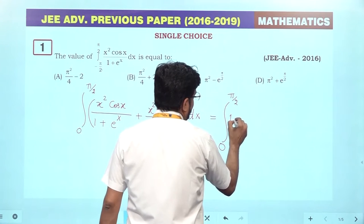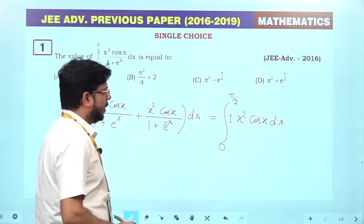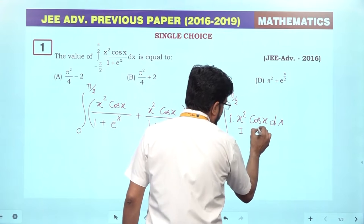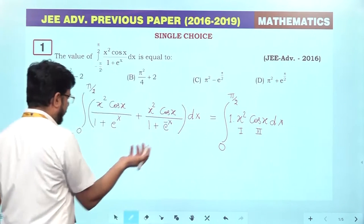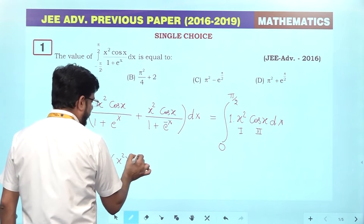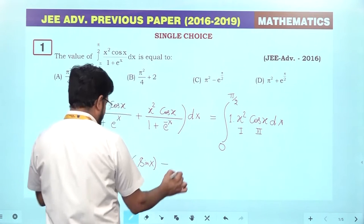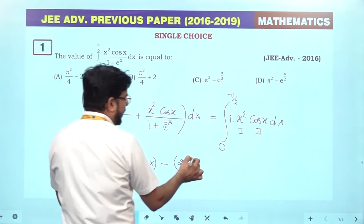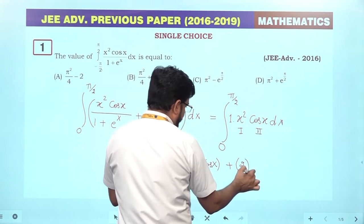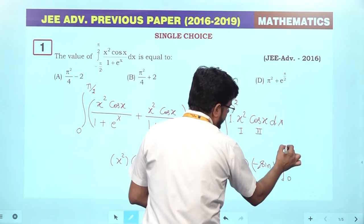Now we have x squared cos(x) dx, so we integrate using integration by parts. We take the first function and second function and apply integration by parts — a short trick. We apply two IBP steps directly. First function as is, then second integration: cos(x) equals sin(x). Then minus x squared differentiation which is 2x, and sin(x) integration which is minus cos(x). Then plus 2x differentiation which is 2, and minus cos(x) integration which is minus sin(x). The limit we keep is zero to pi by two.